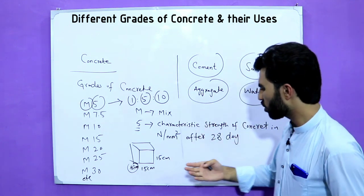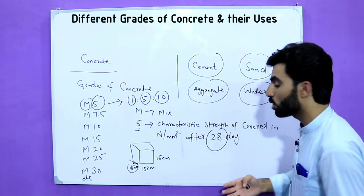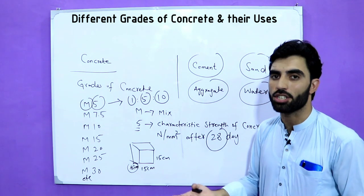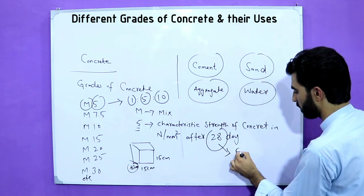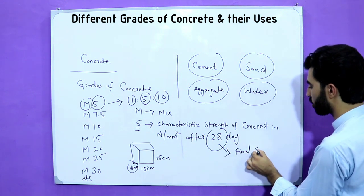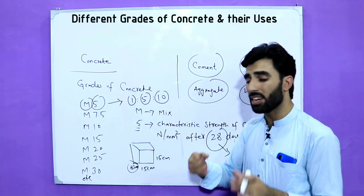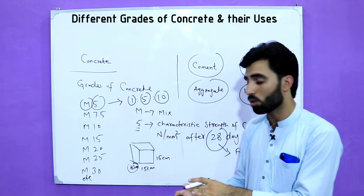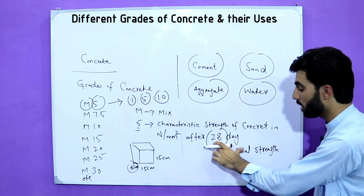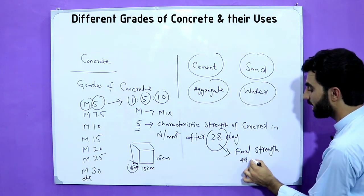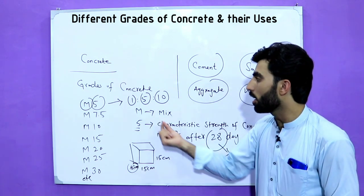Why do we test after 28 days and not 20, 15, or 10 days? Because concrete reaches its final strength at 28 days — specifically about 99% of its total strength. That is why 28 days is the standard testing period for the characteristic strength of concrete.